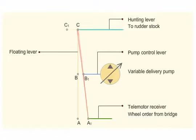As the rudder starts turning, the hunting lever will move from C to C1, pushing the floating lever. This will bring back the pump control lever to position B and the pump will stop discharging. The rudder will remain in this position, port side, till the next order is given.